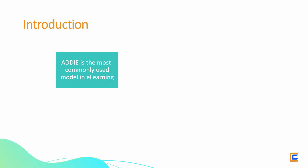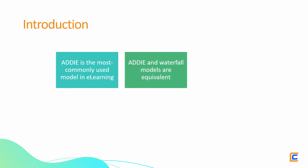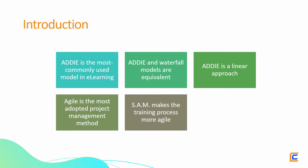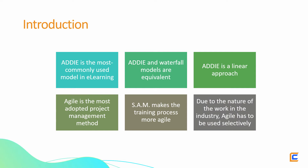In the e-learning industry, ADDIE is the most adopted approach to managing training design and development. The ADDIE model is equivalent to the waterfall model followed in software development, and follows a linear approach. Agile is the buzzword and the most adopted project management method in the software industry. The successive approximation model, or the SAM model, attempts to make the training design and development process more Agile. However, owing to the nature of work in the e-learning industry, we cannot go Agile with our project management for each course that we are developing. The details of the SAM model or the Agile project management methodologies are out of scope for this video, but we'll briefly discuss these concepts.